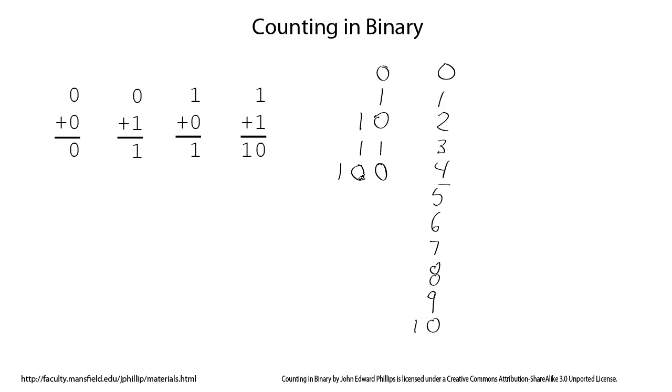And so we have a 1 over in the fours column, the ones column, twos column, the fours column. So a 1 in the fours column, that's the same as the number 4.